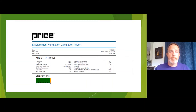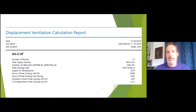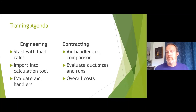This is a sample output for one space — it shows you how much DV air needs to go in. Here's what your air handler report is going to look like. And in the end, you can, without having to redesign the whole system, decide whether or not you can use DV on the front end. Here's the class agenda: we'll start with the basics, take your load calcs, show you how to import with the tool, look at the air handlers, do some cost comparisons, and then you can decide if DV is the right solution for your customer.